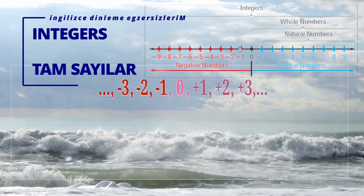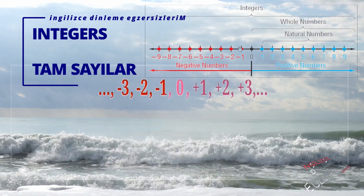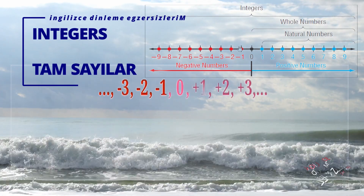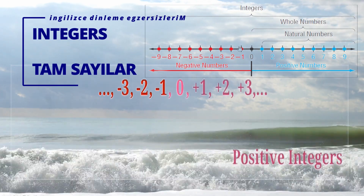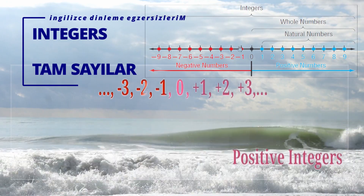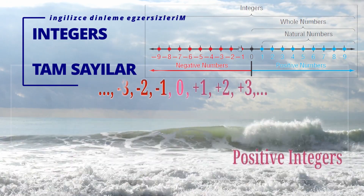Integers are positive integers — so 1, 2, 3 — and negative numbers — so negative 1, negative 2, negative 3.